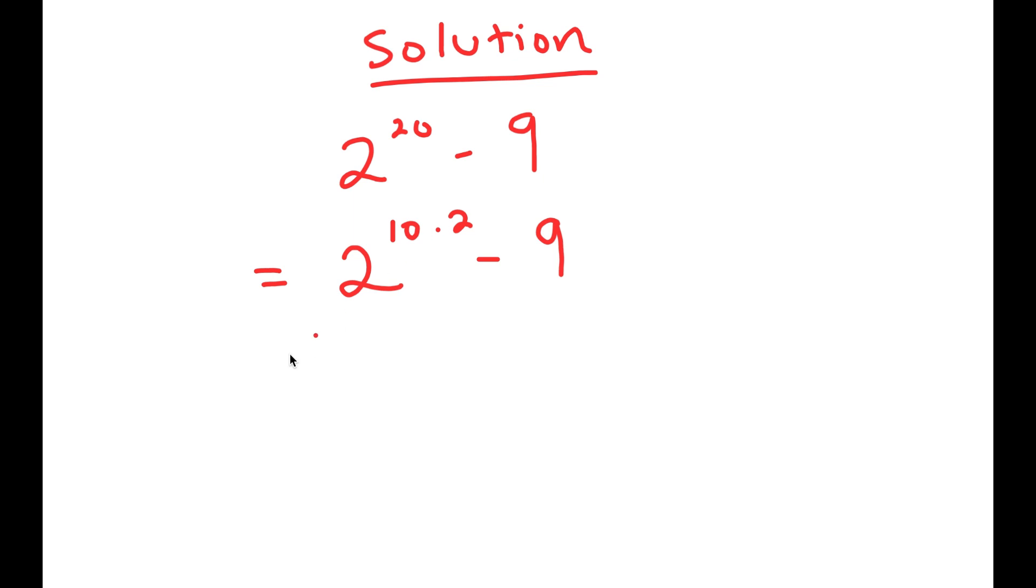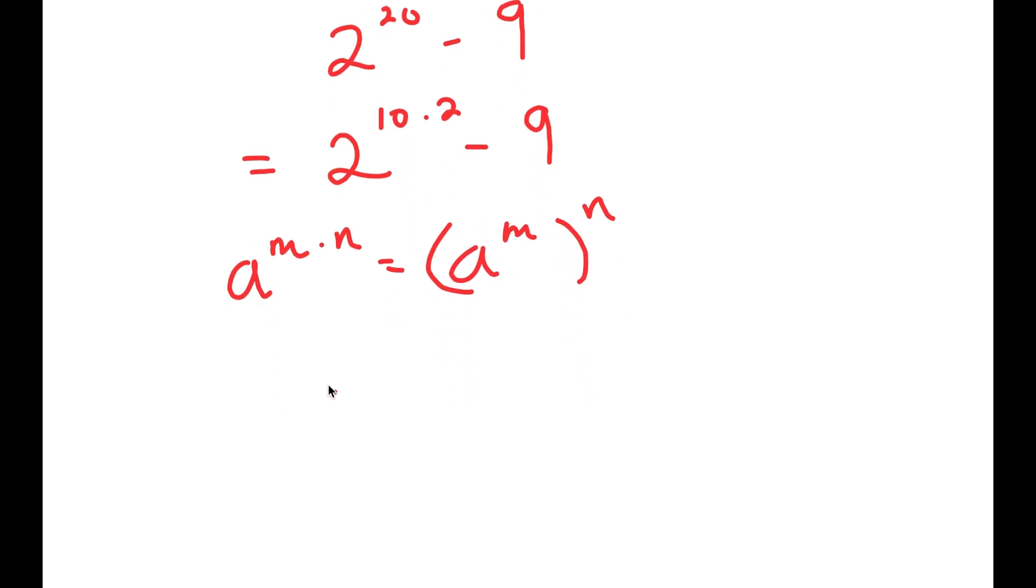And now, if I have something in the form a to the power of m times n, this is equal to a to the power of m to the power of n. So 2 to the power of 10 times 2 is going to equal 2 to the power of 10 to the power of 2.